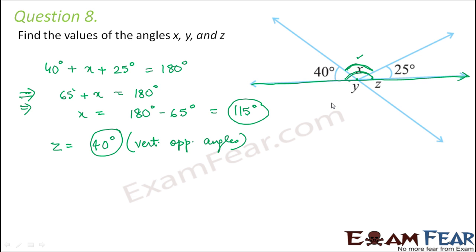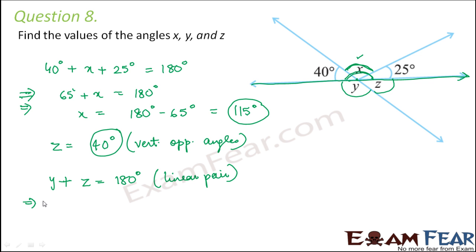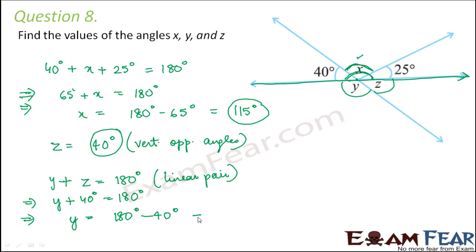Now we are left with y. y and z also form a linear pair, so y plus z equals 180 degrees. Therefore y plus 40 equals 180 degrees, or y equals 180 minus 40, which is equal to 140 degrees. So x is 115 degrees, y is 140 degrees, and z is 40 degrees.